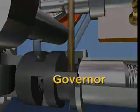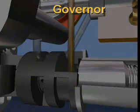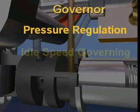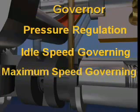The governor assembly performs three functions: pressure regulation, idle speed governing, and maximum speed governing.